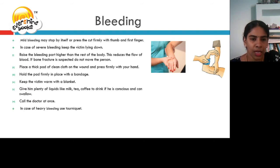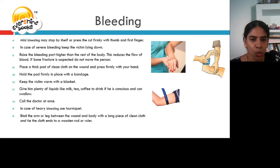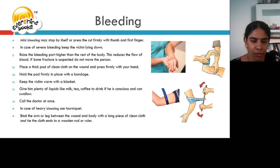In case of heavy bleeding, use a tourniquet. Find the arm or leg between the wound and the body with a piece of long clean cloth and tie the cloth ends to a wooden rod. Wind it until bleeding stops.